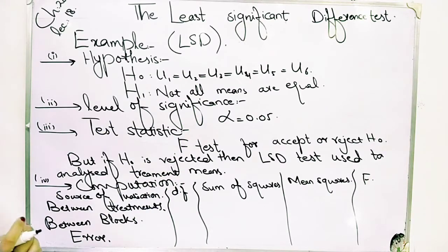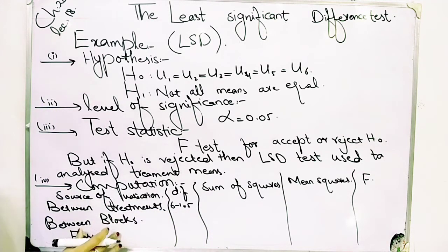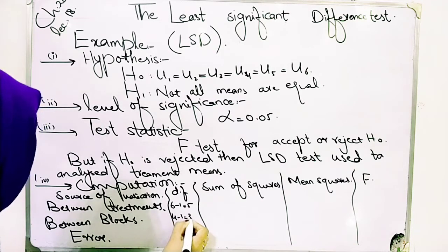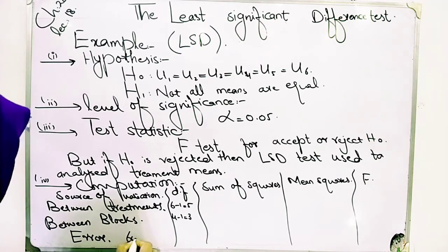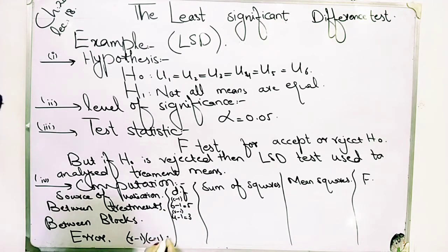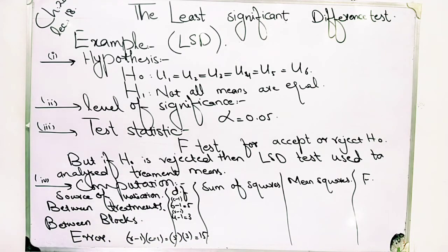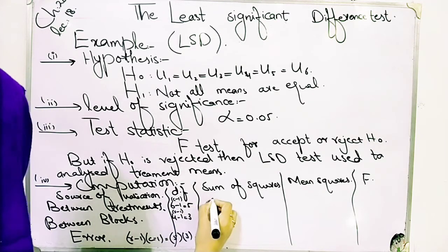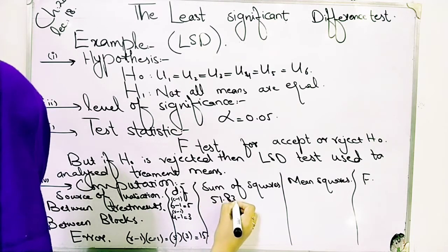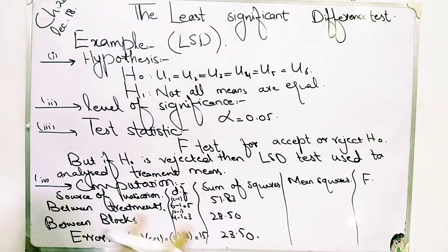How many treatments are there? Between blocks — how many blocks do we have? Four. Four minus one equals three. The error term is row minus one multiplied by column minus one, which is 5 × 3 = 15 degrees of freedom. When we calculate values, the sum of squares will be 51.83 for treatments, 28.50 for blocks, and 23.50 for error. You have to calculate these values.